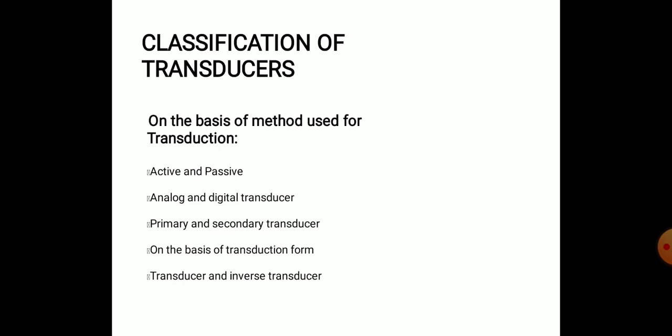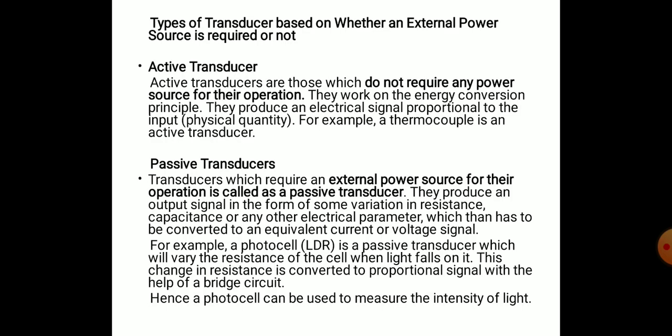The classification of transducers is based on several criteria: active and passive; analog and digital; primary and secondary; on the basis of transduction form; and transducer versus inverse transducer. Active transducers do not require any external power source for their operation — they work on the energy conversion principle and produce an electric signal proportional to the input. For example, a thermocouple is an active transducer requiring no external battery for its activation.